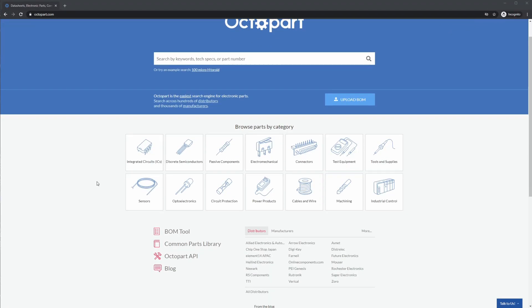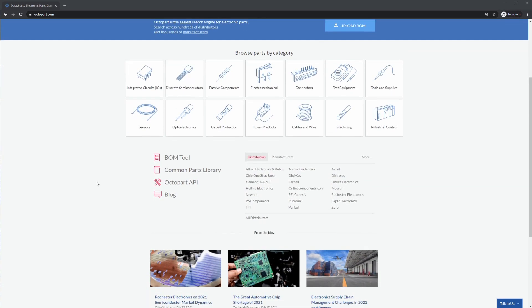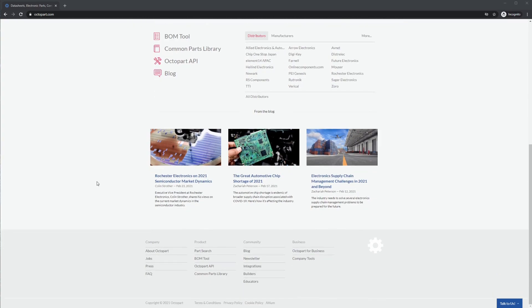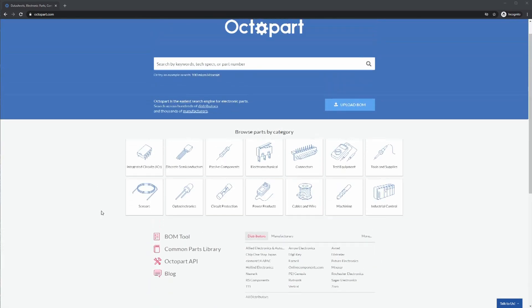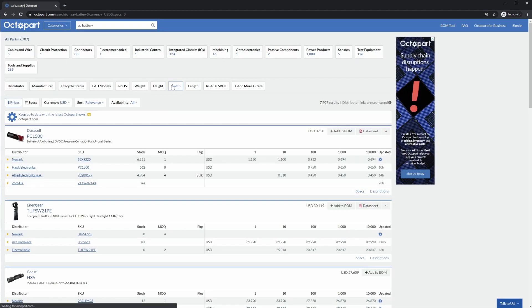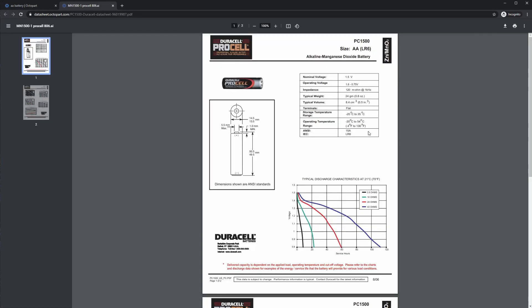Data sheets are how information about electrical components are presented. Every battery has a data sheet where you can get a ton of information about the battery. Data sheet reading is a great way to learn and become familiar with electronics. Octopart is a source for data sheets. Type in AA battery and look through and find some data sheets. See if you can find the concepts mentioned in this video.